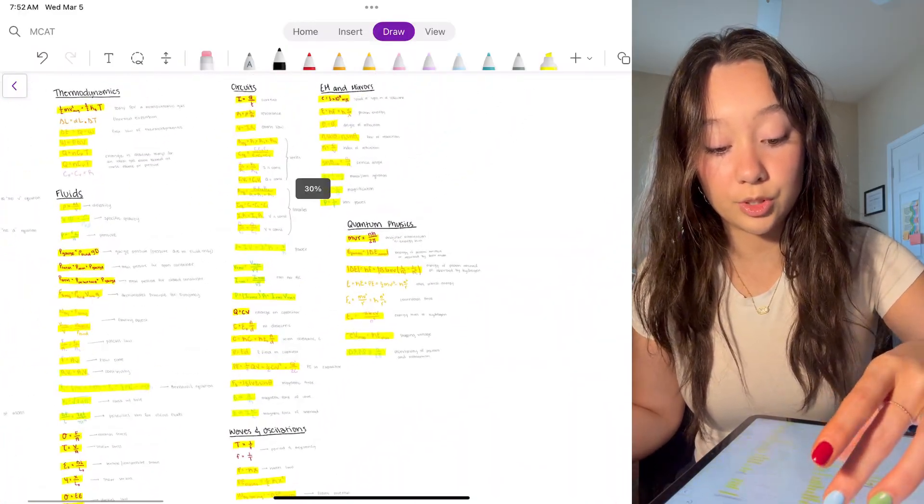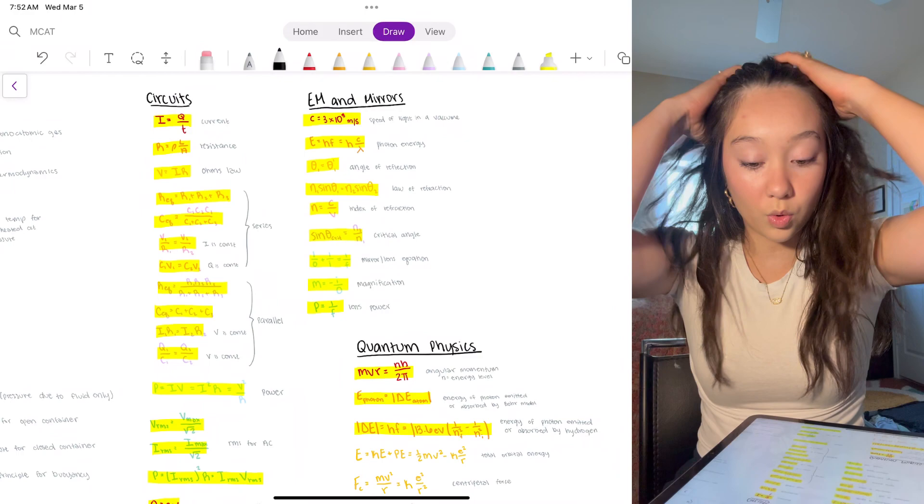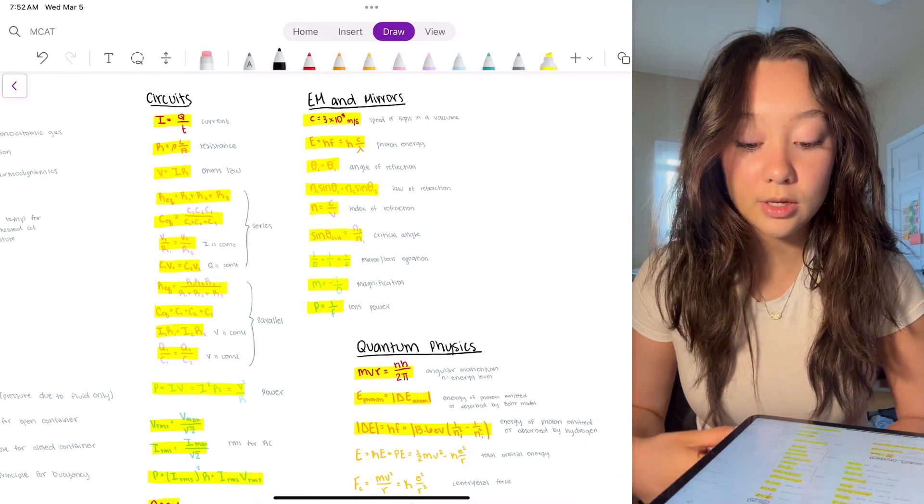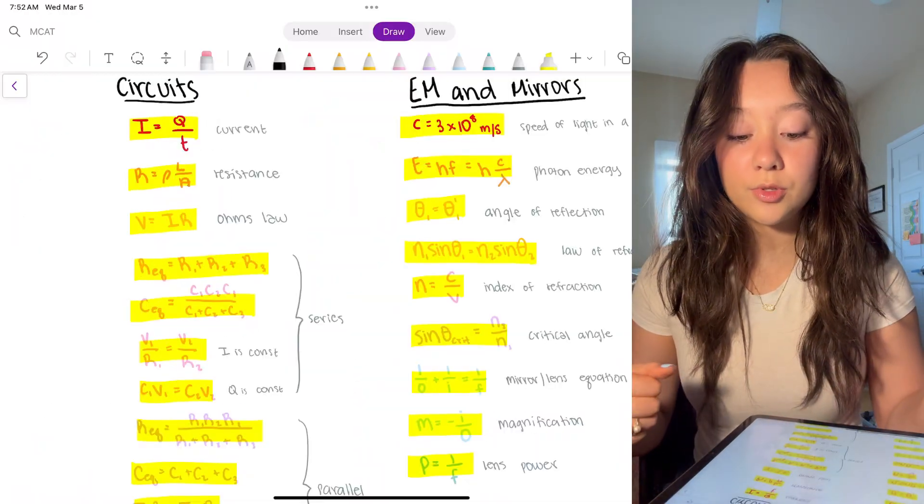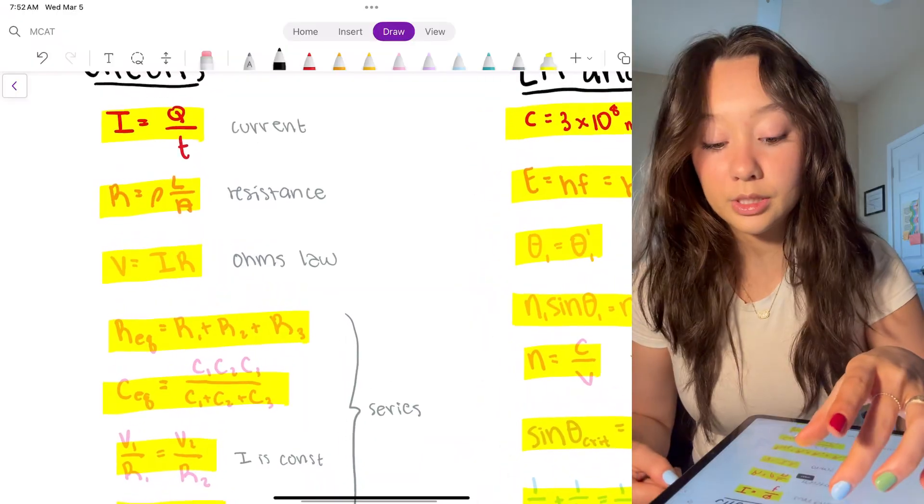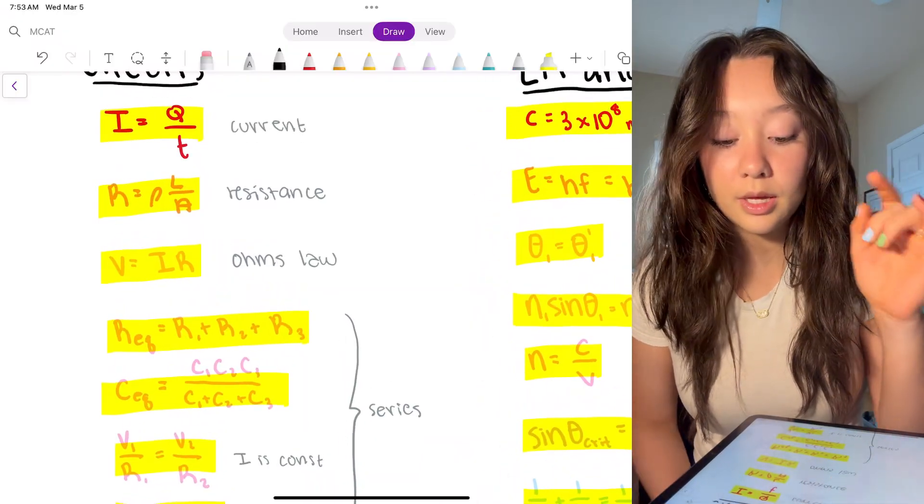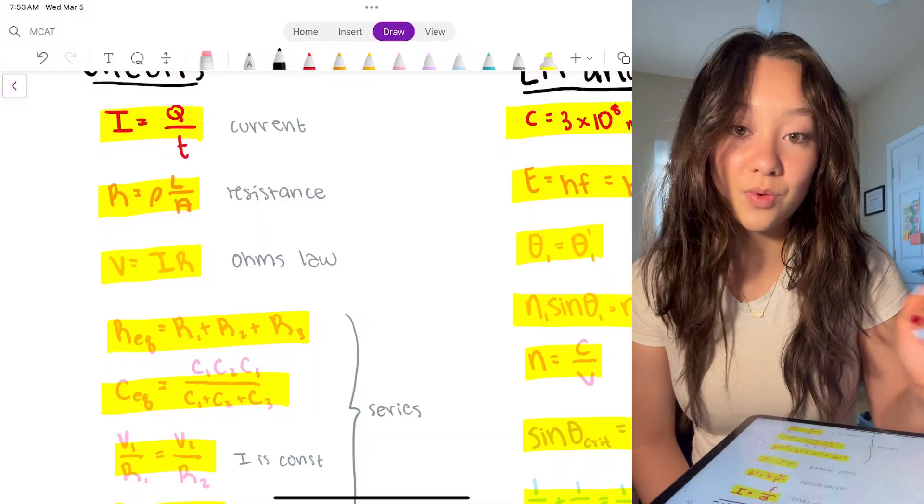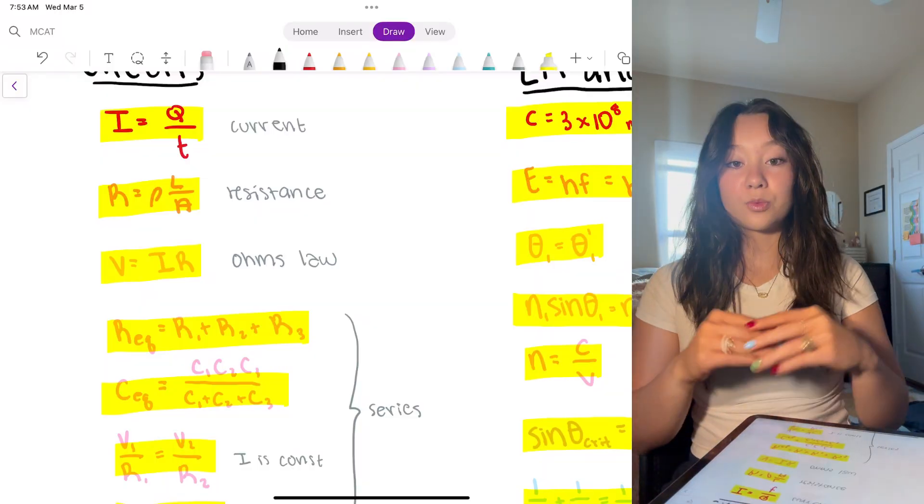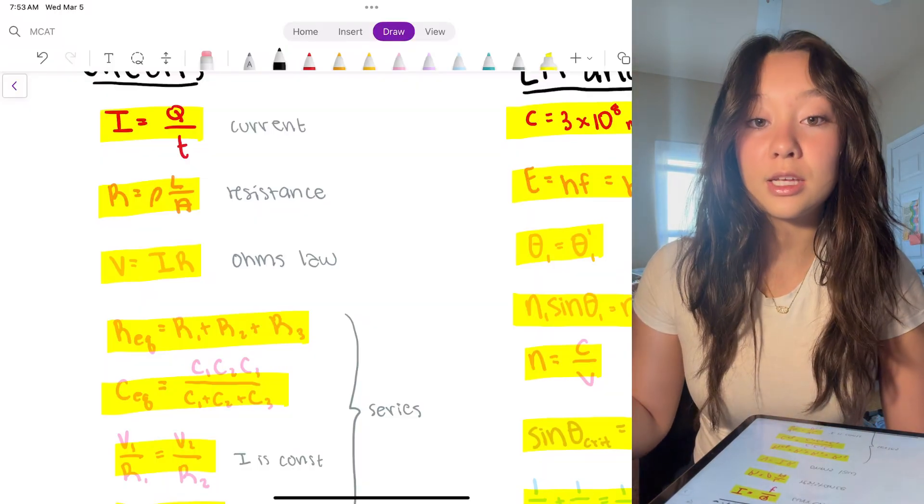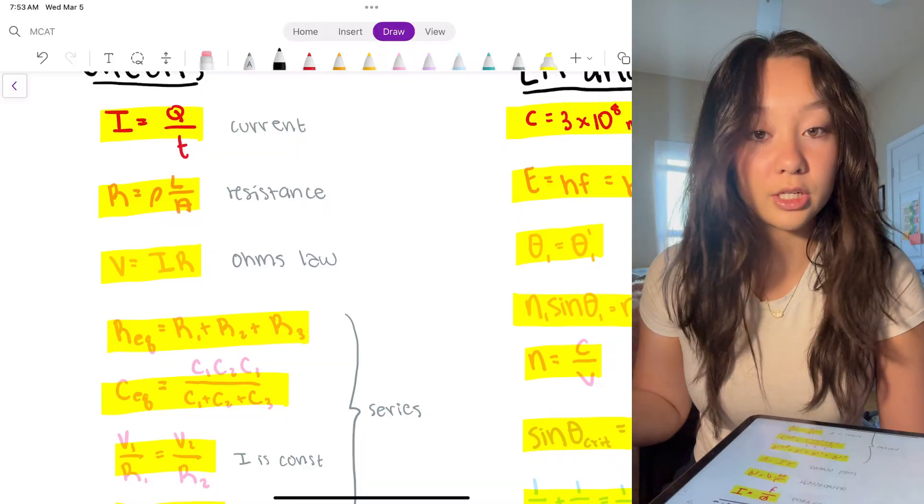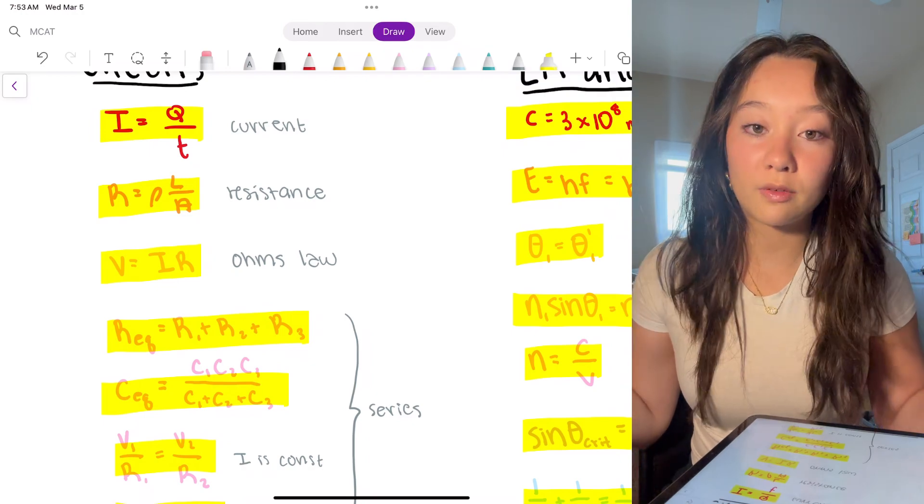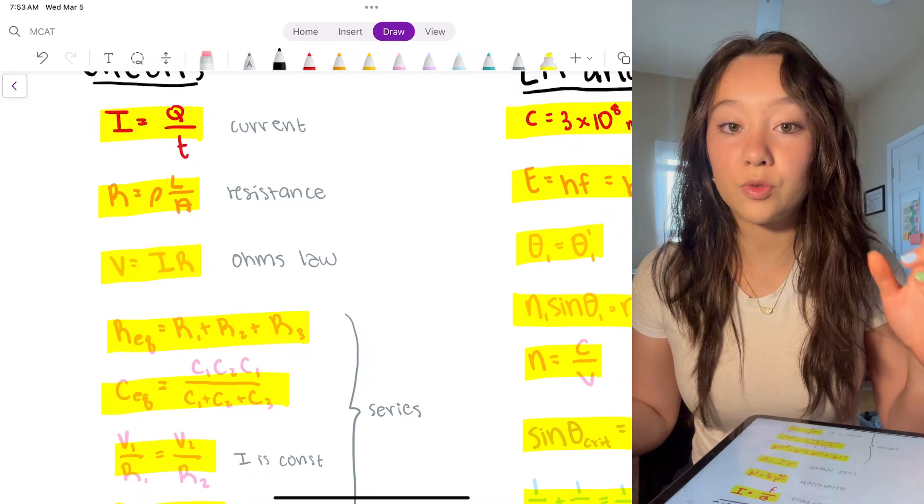These are important to know. The biggest one is Ohm's law, V equals IR. Resistance, maybe not knowing the exact equation, but knowing the relationships, so knowing that an increase in length will increase resistance and a decrease in area will increase resistance. And then this resistivity, this rho here, that's constant for the wire, so that's important to know. The resistance will change with the length and diameter, but the resistivity is unique to each material, so that is not going to change with the properties, the length and the diameter and stuff like that. Current, I equals Q over T, it's pretty self-explanatory. Current is the charge, movement of charge over time.